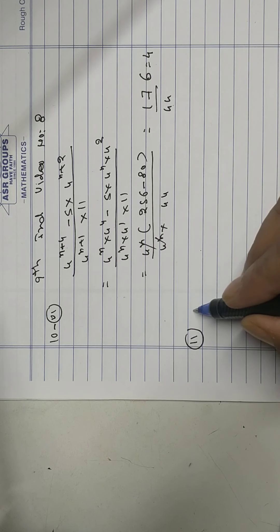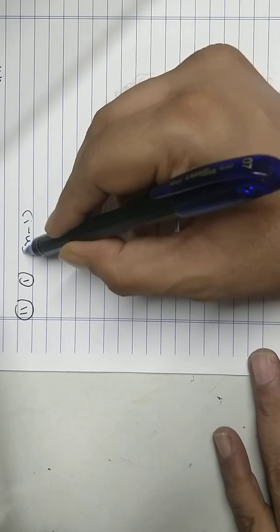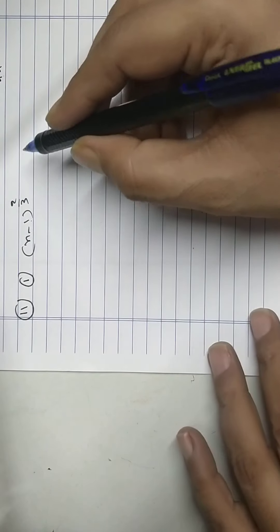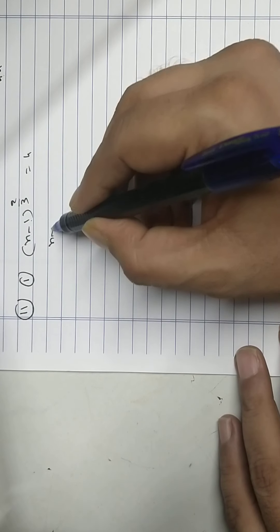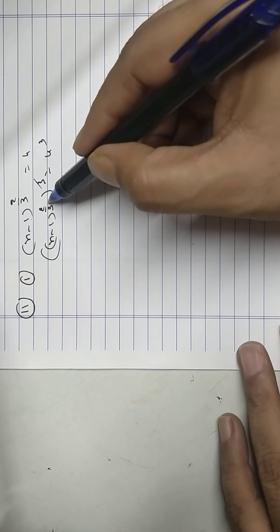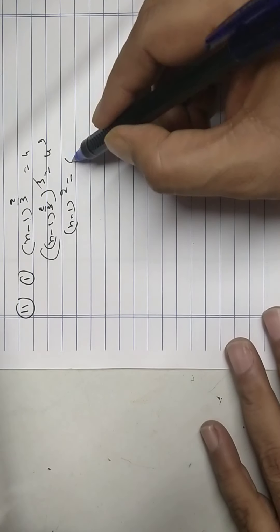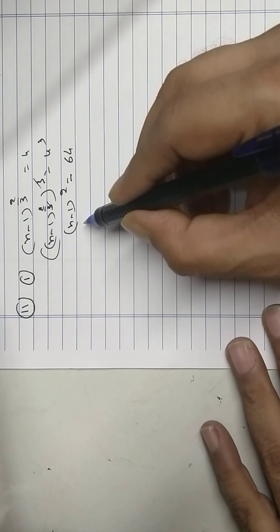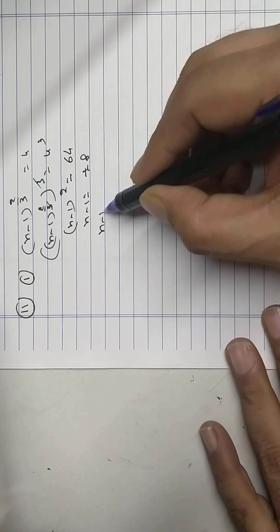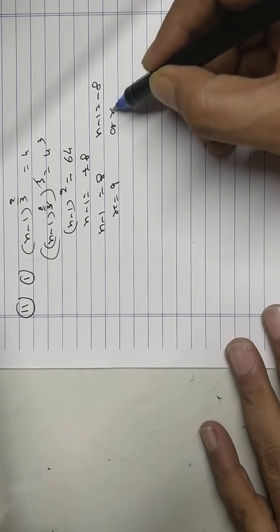Problem 11, Part 1. Here we will equate the base: x minus 1, raised to 2 by 3, equal to 4. First we will cube both sides: x minus 1 raised to 2 by 3, that raised to 3, equals 4 raised to 3. Cancel — x minus 1 raised to 2 equals 64. Now find square root: x minus 1 equals plus or minus 8. So x minus 1 equals 8 gives x equals 9, or x minus 1 equals minus 8 gives x equals minus 7.